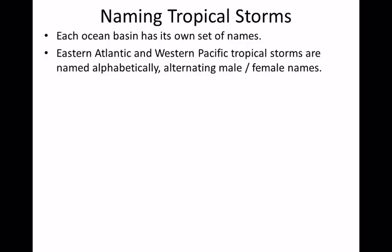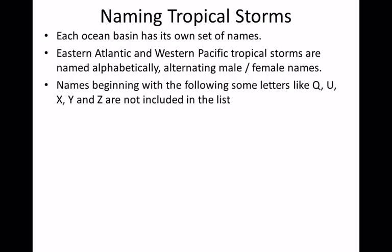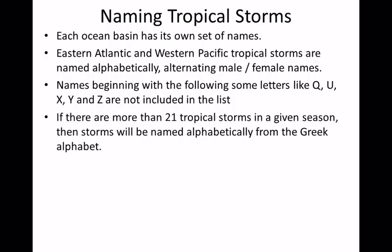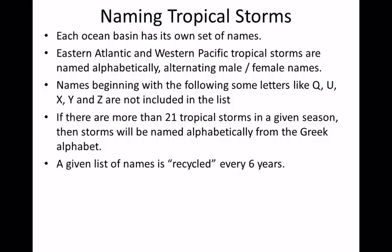For the ocean basins east and west of North America, hurricane names alternate female and male, and are alphabetical. Letters Q, U, X, Y, and Z are excluded, leaving at least 21 possible names per season. The season of Katrina actually exhausted all the letters, requiring Greek letters for additional storms. There are six rotating lists for each ocean basin.